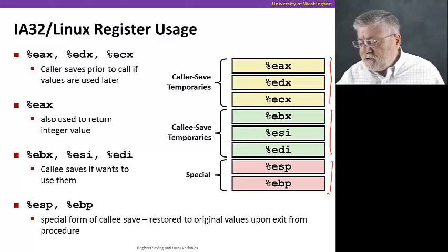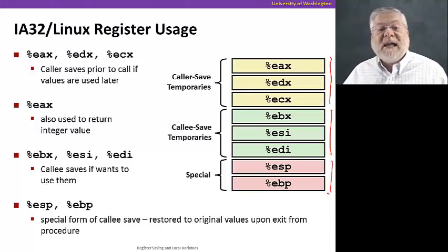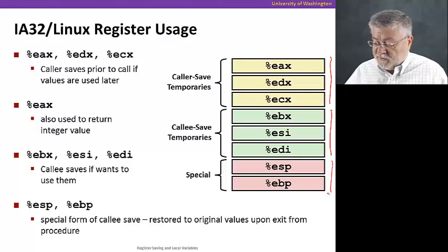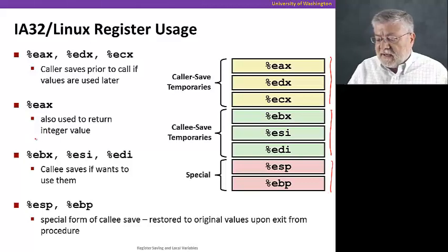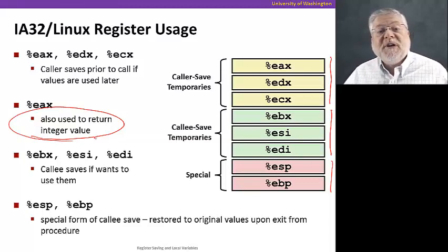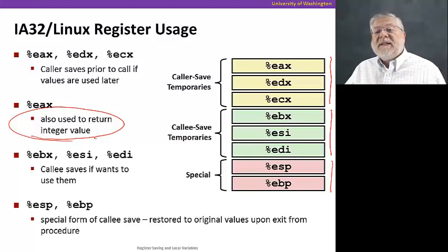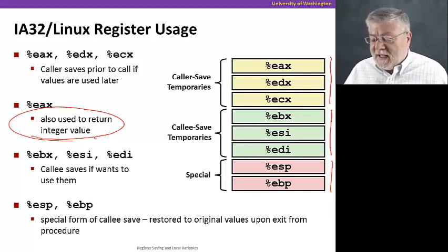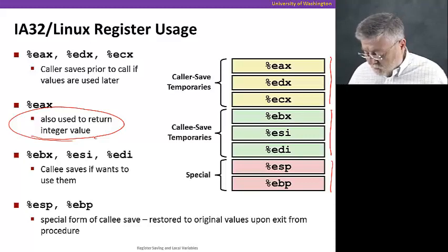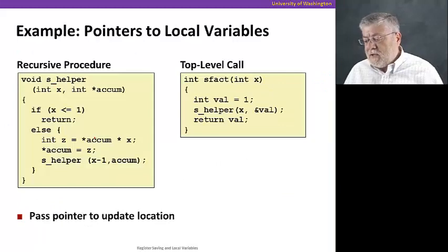And then of course we have two special registers that are the base pointer and the stack pointer. Those are handled a little bit differently, but also involve restoring them to their original values upon exit from a procedure. The last thing to remember is that EAX, the reason also it's caller saved is because, remember, the returning procedure puts its return value in EAX. And so if the caller wants to use what it had in EAX previous to the call, it better save it somewhere else. And where might it save it? Probably in memory somewhere.